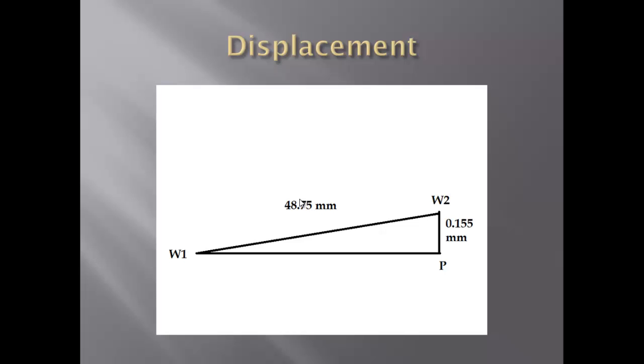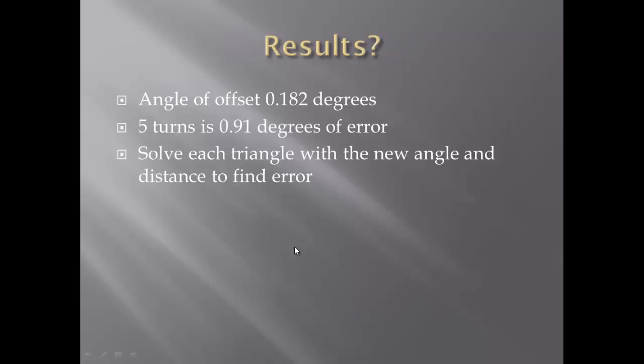So you can calculate the angle that you're actually going to be off by, which is this right angle. So we're looking for this angle right here. And it's pretty simple, because you have your hypotenuse and your opposite. So that's a sine. So you can find your angle. And my angle offset was 0.182 degrees, which is not even a degree, that's barely anything.